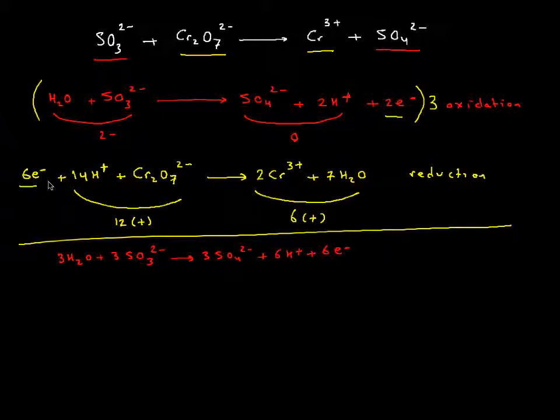The equation below is as is. I write my 6 electrons, then I cancel them out, plus 14 H+ plus Cr2O7^2- giving you 2 Cr^3+ plus 7 H2Os.